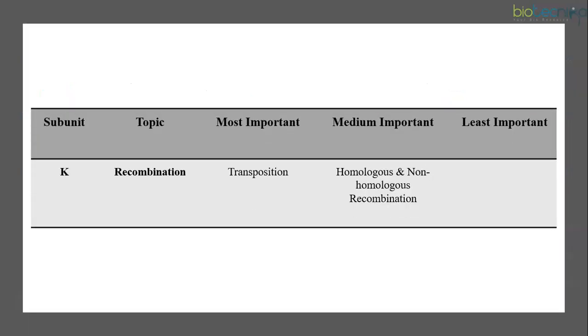Lastly, coming to subunit K, which is about recombination. From this particular subunit, transposomes is the most important topic, which you also study in unit 2. Even homologous and non-homologous recombination, that is, site-specific recombination and homologous recombination, you study in unit 3 as well. So you can skip this part from here if you are preparing this topic in unit 3. So if you are preparing these topics from unit 2 and unit 3, you can skip this subunit from unit 8.